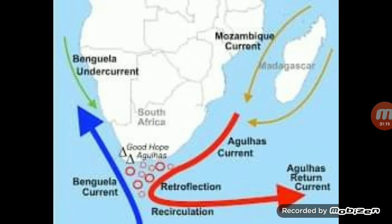Now we come to the Benguela Current, which flows off the coast of Africa. It is a cold current flowing in the South Atlantic Ocean along the western coast of Africa. Due to its impact, the Namib and Kalahari deserts have been created in the southwestern part of Africa.